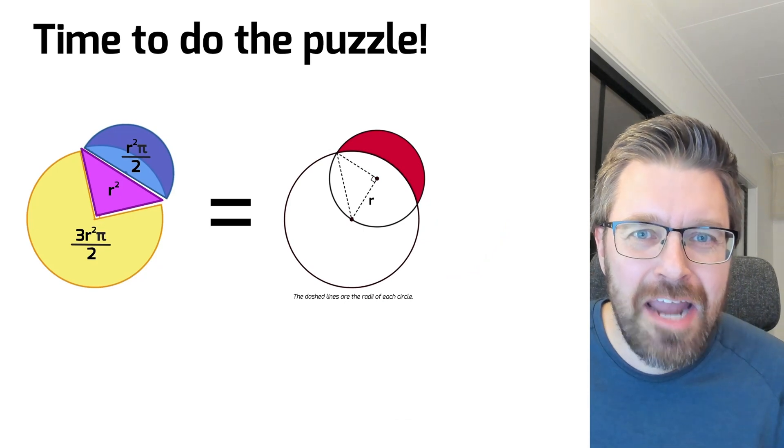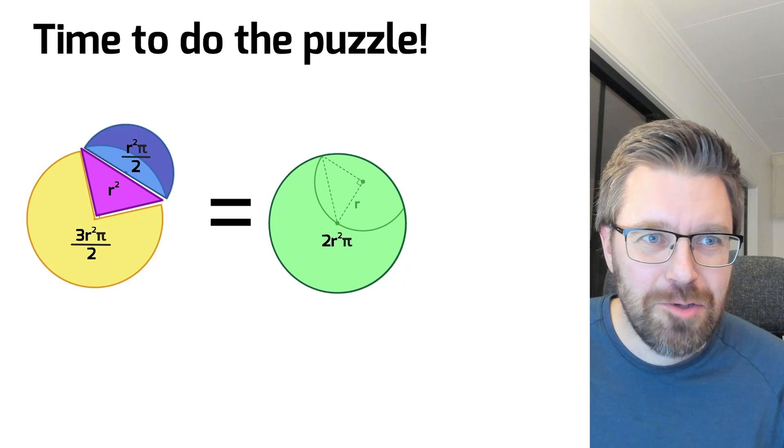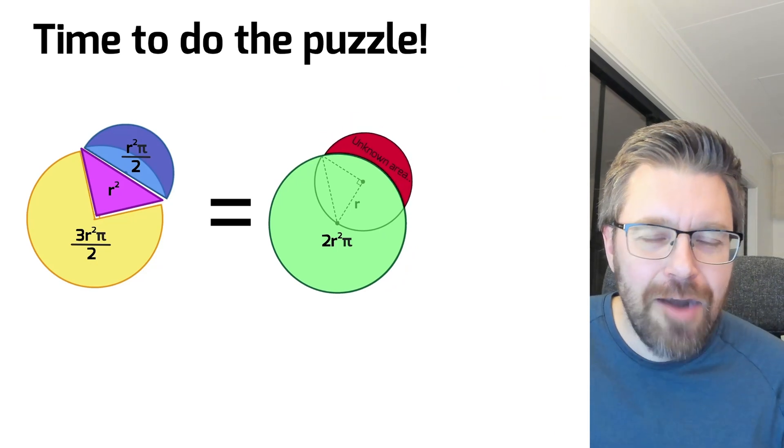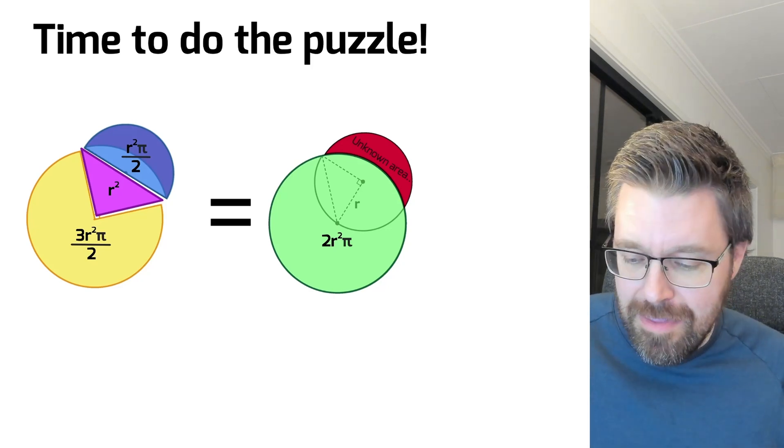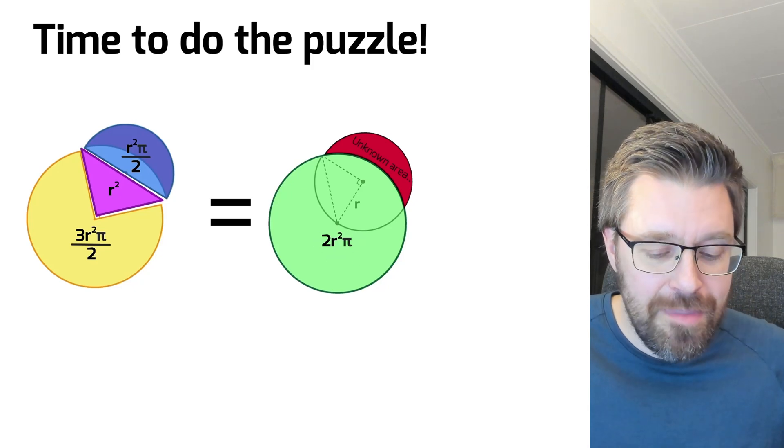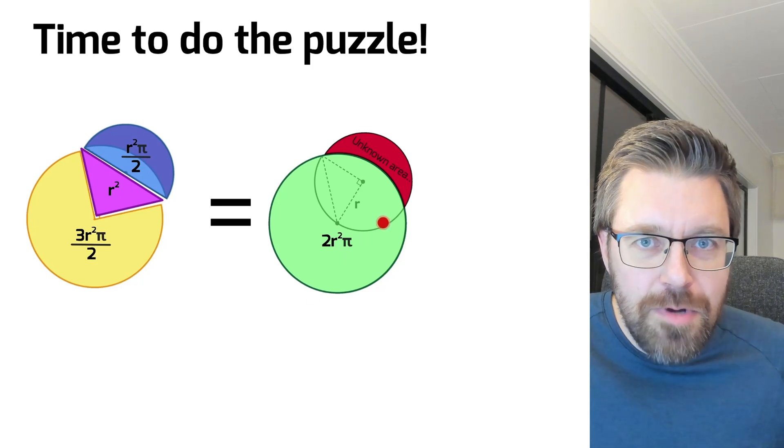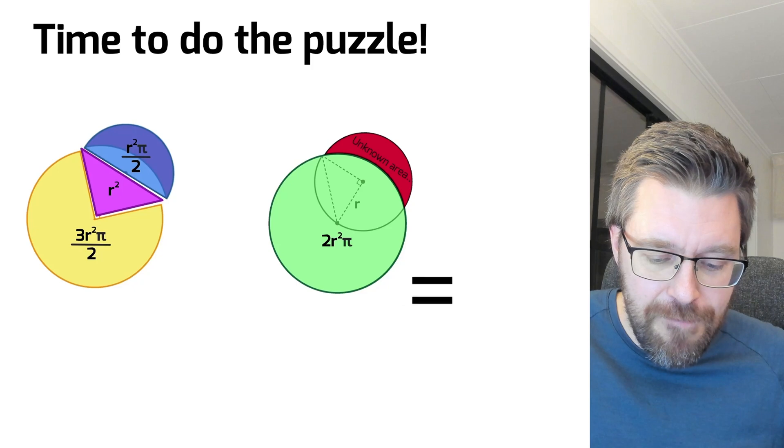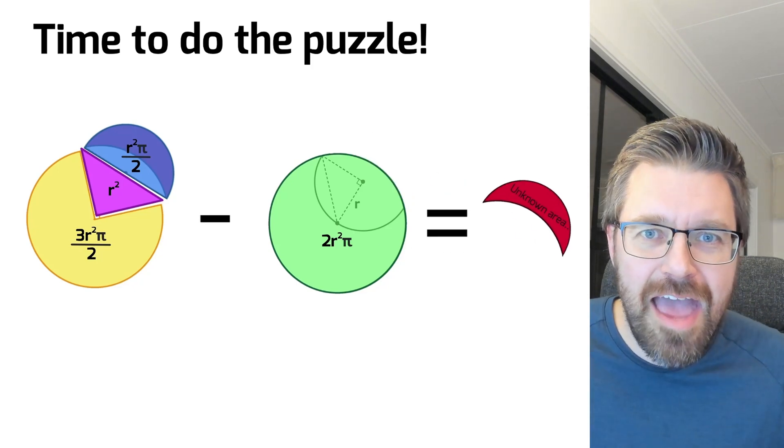But you can do it in another way too. You can do it with this piece right here, the green one, and then this unknown area. And if these two are the same thing, the sum of this expression is the same as the two r squared pi plus the unknown area, then you can subtract the green area from this to get the red area. So if we do like this, then we get the red area.